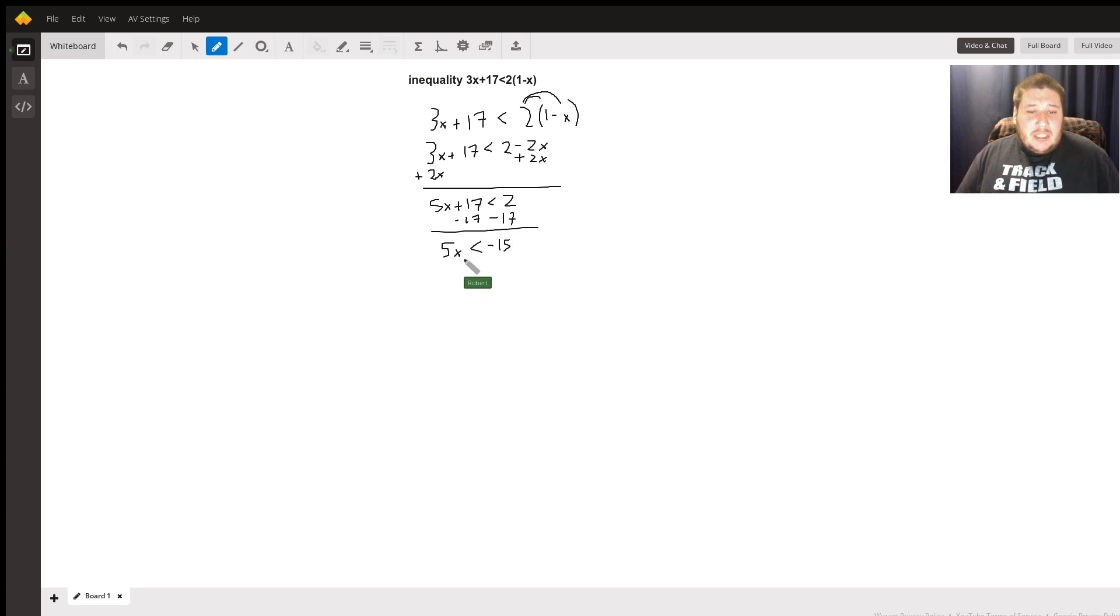Last but not least, I want to truly get this x by itself. I'm going to divide it by 5 since I'm multiplying it by 5. I want to do the opposite of what I'm doing so that I get this x by itself. 5 divided by 5 is going to equal 1, so those cancel. We are going to be left with x is less than negative 15 divided by 5, which is negative 3. That is going to be our answer.